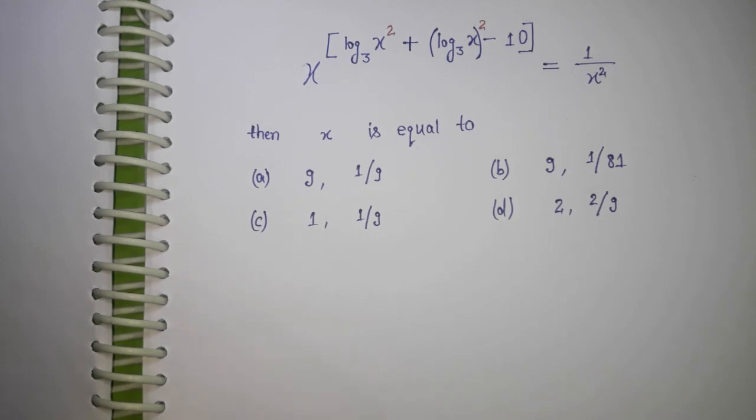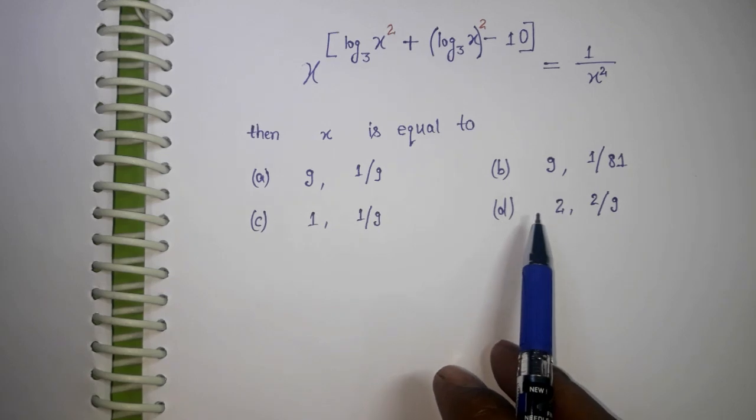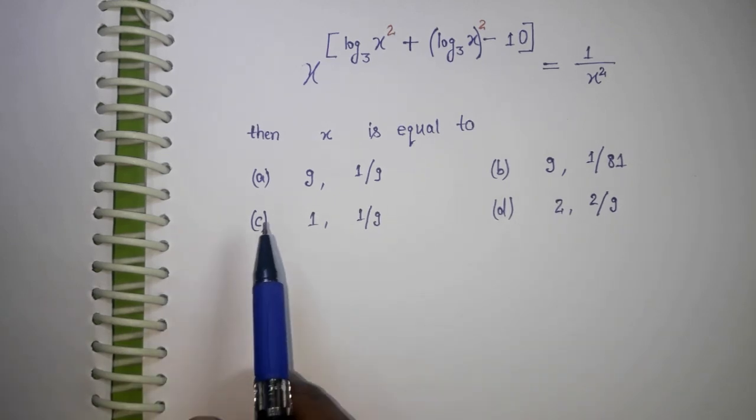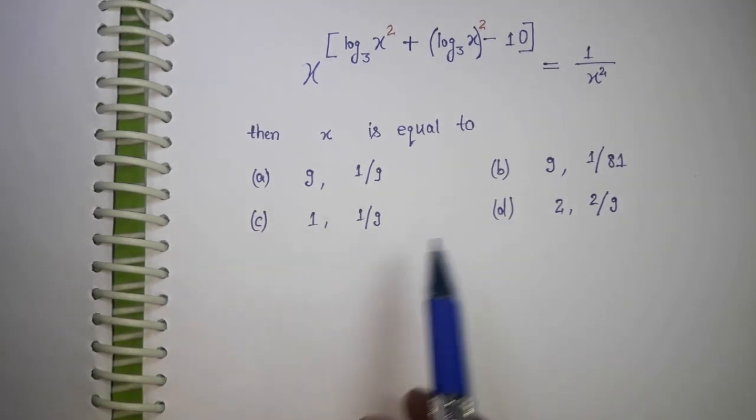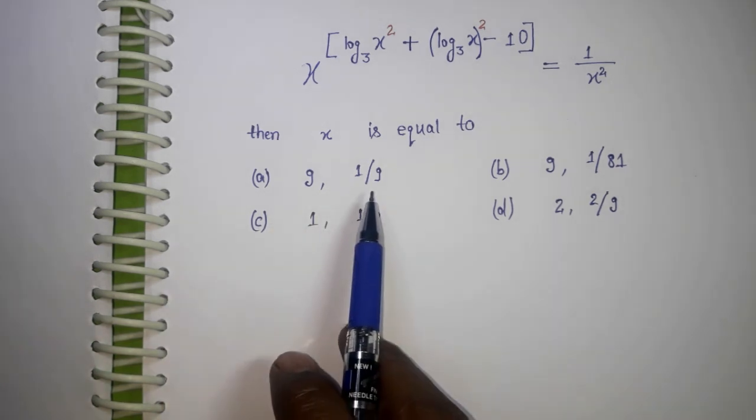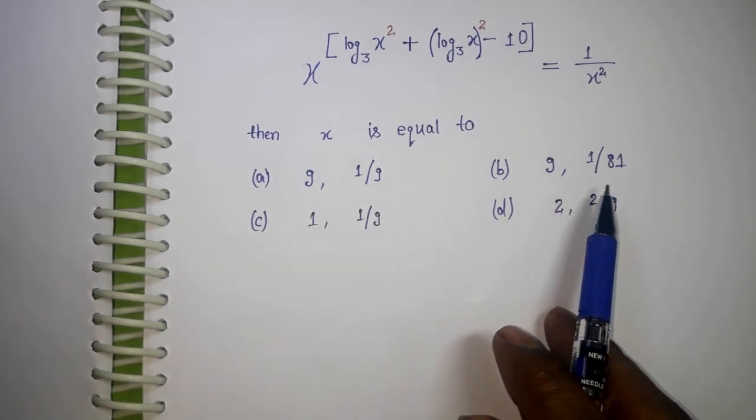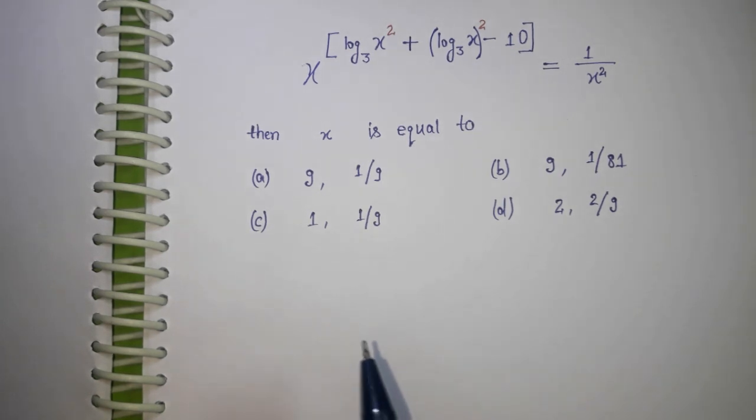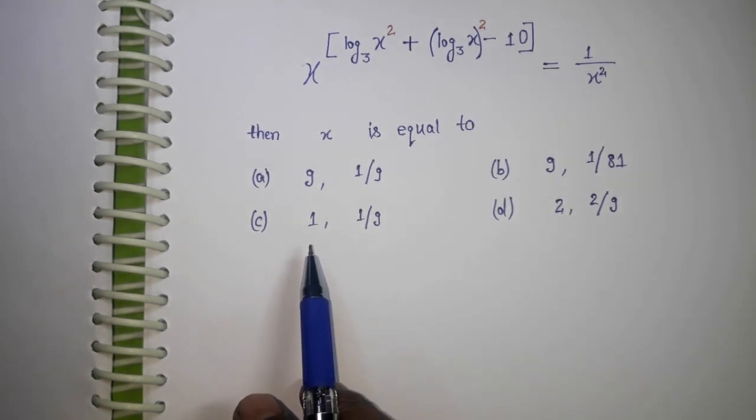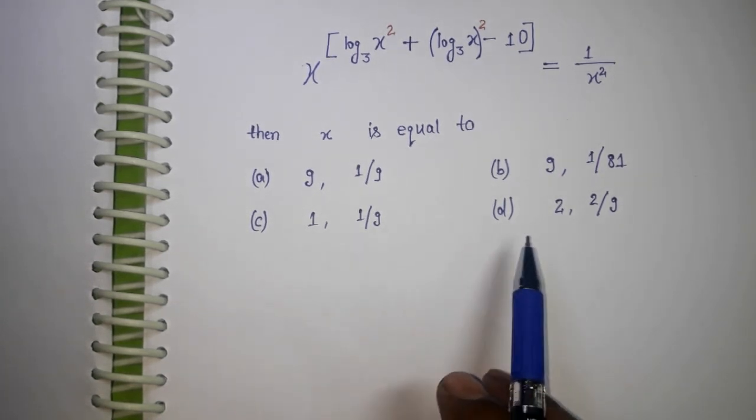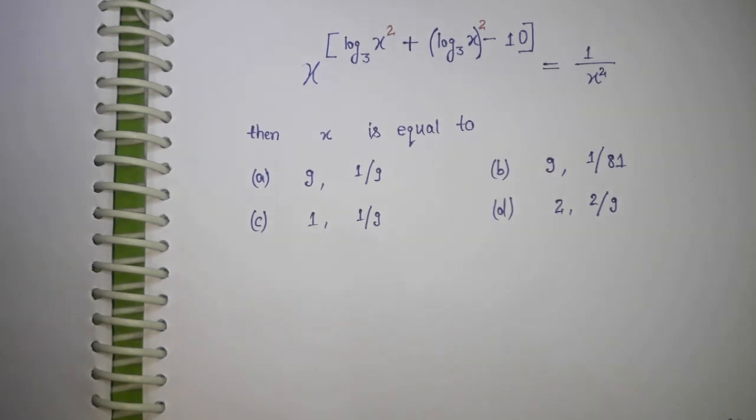We have options: (a) 3, 1/3; (b) 9, 1/81; (c) 1, 1/9; (d) 2, 2/9. Which option is correct?